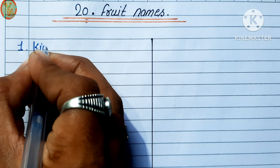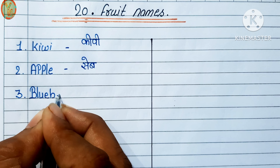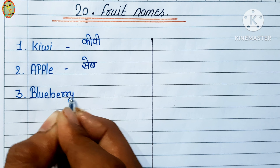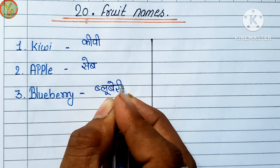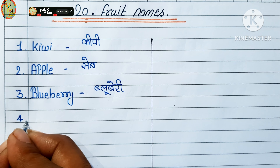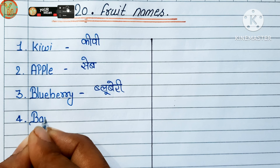Second number: apple. Apple means apple. Third number: blueberry. Blueberry means blueberry. Fourth number: banana. Banana means banana.